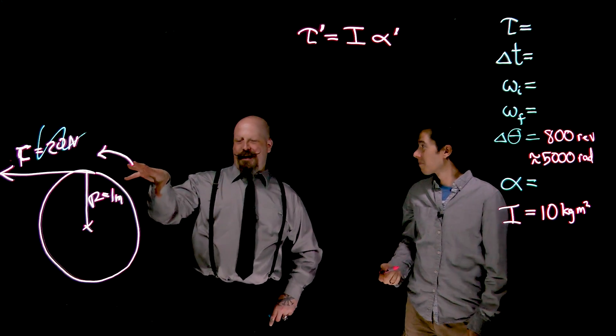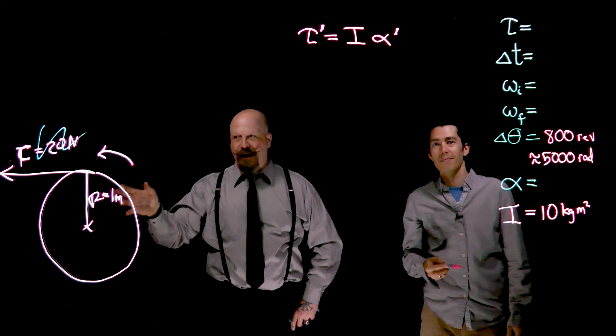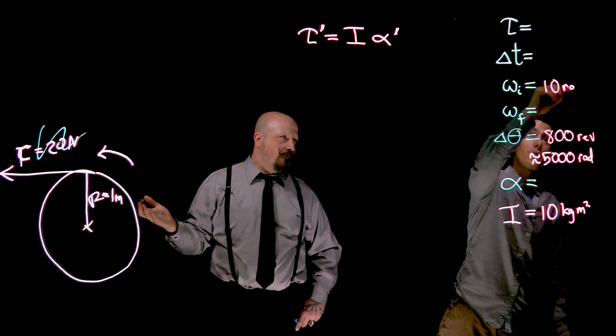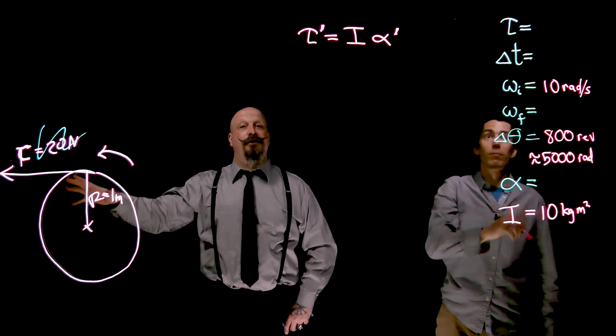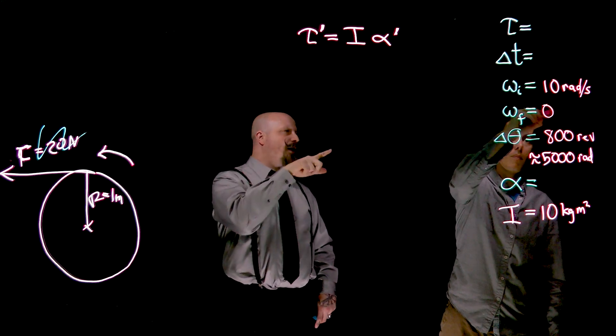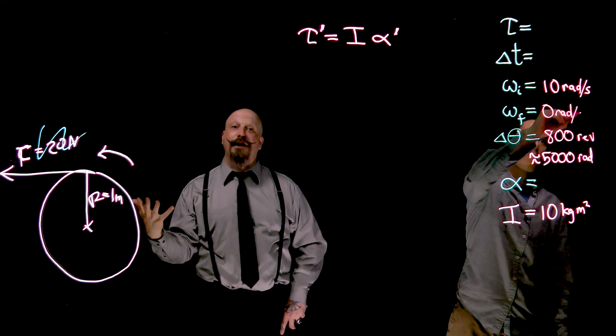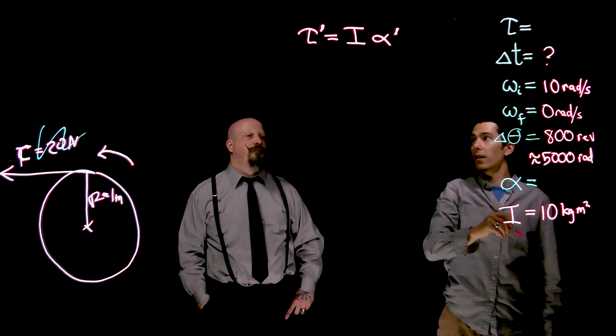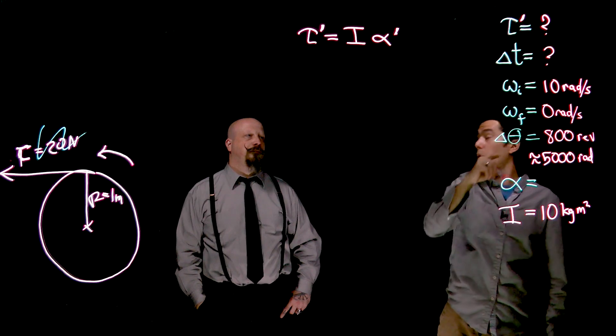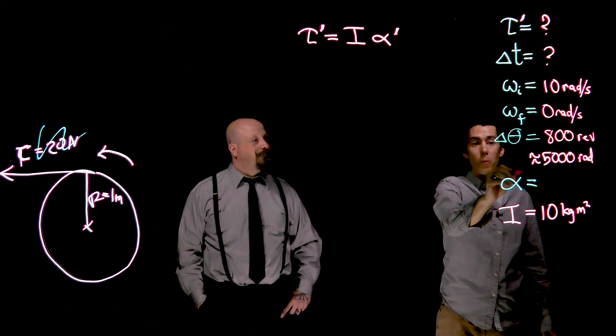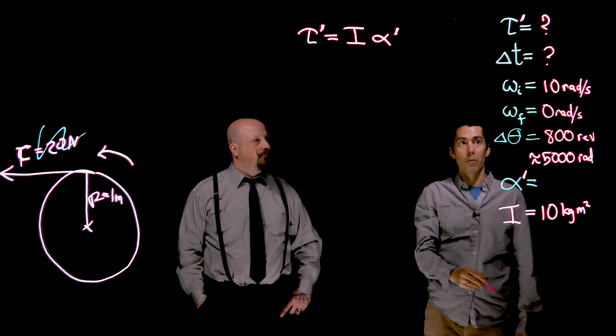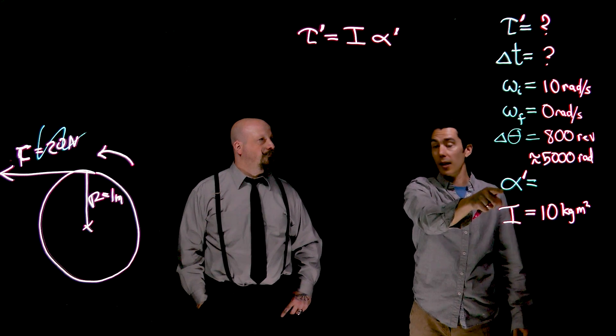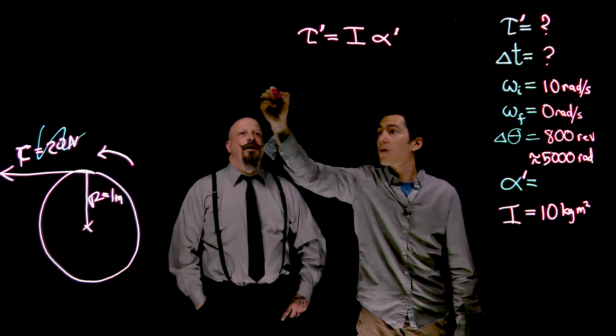And then we also look at the idea that our initial rotational speed is what we ended with last time. Okay, so that was 10 rads per second. Right. And this is eventually going to slow down and stop. So after that 800 revolutions, we'll eventually get to zero radians per second. We don't know how much time that takes. We've got a new torque, let me put a little prime here, and we're going to calculate that. And we've got this new alpha, which we also don't know. But we have enough kinematic information that we can calculate what alpha is. Perfect.